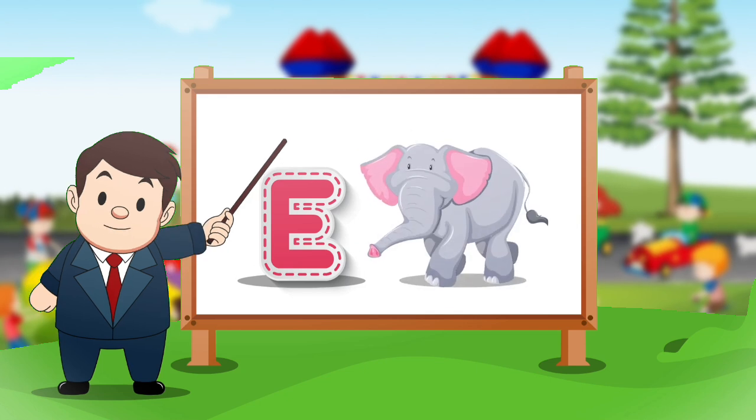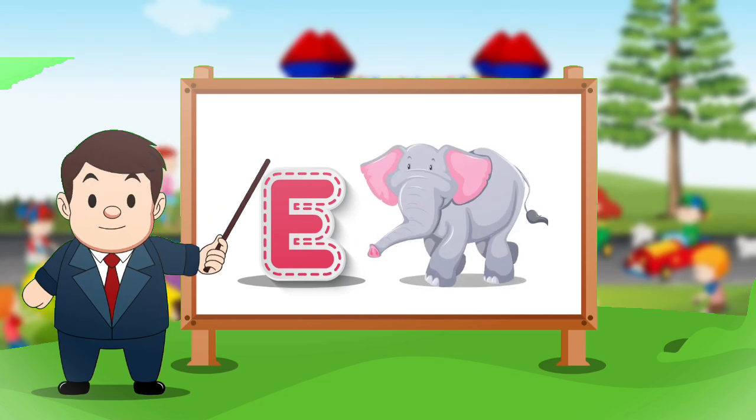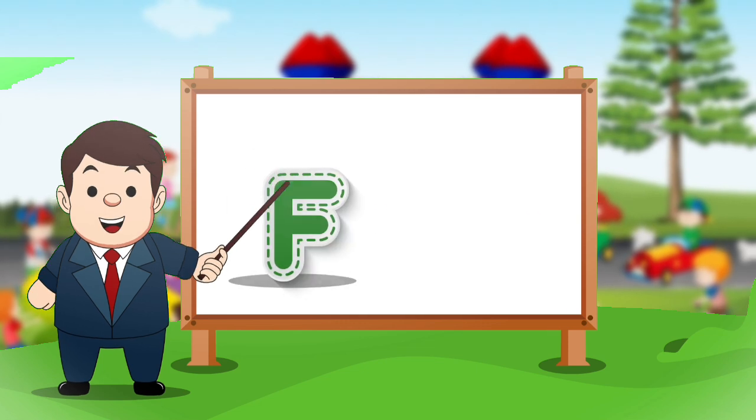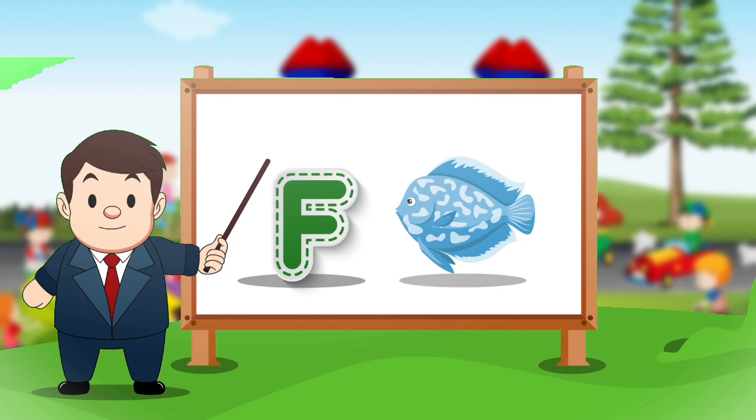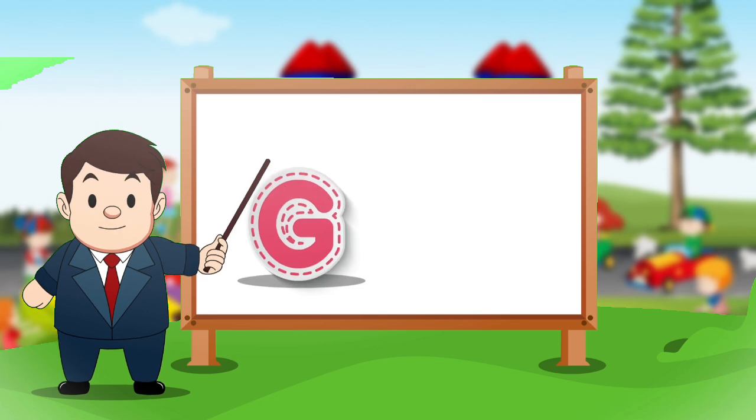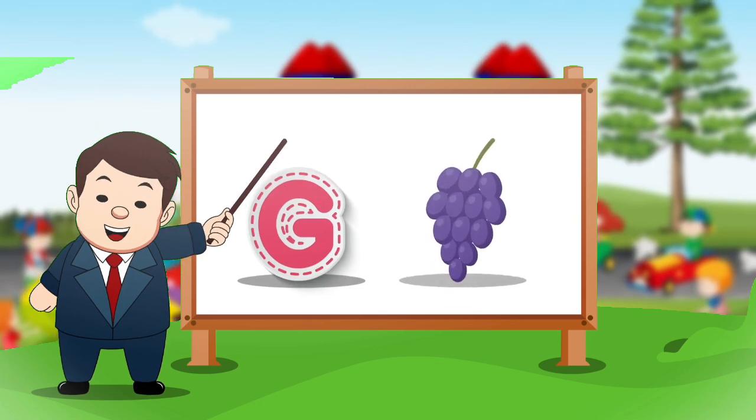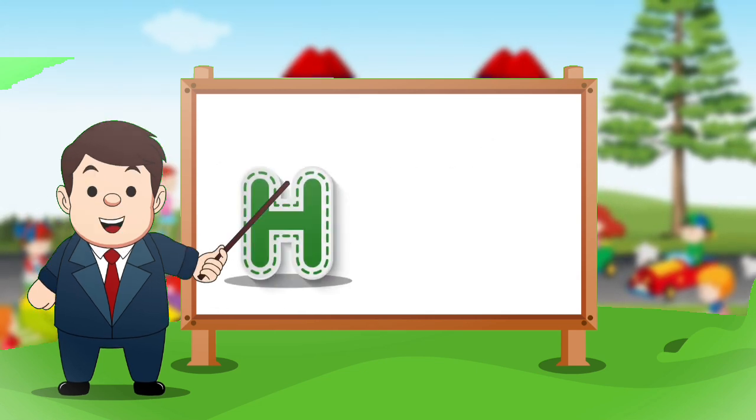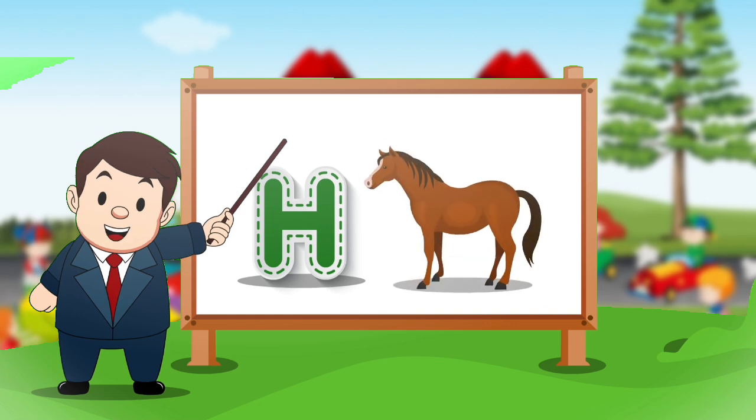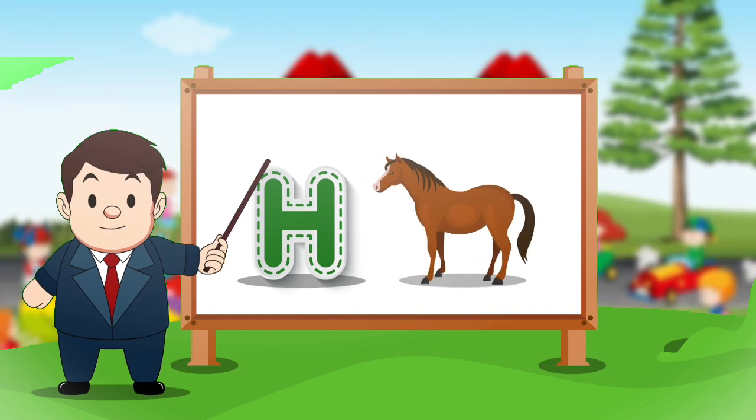E. E for elephant. F. F for face. G. G for crab. H. H for horse.